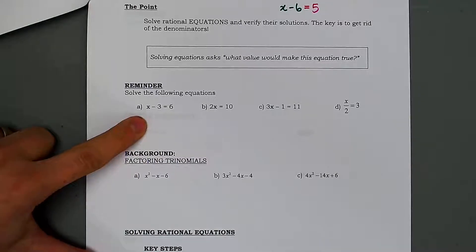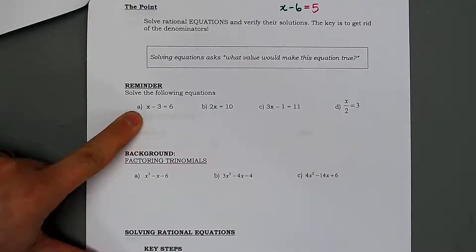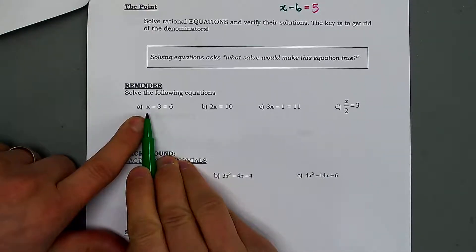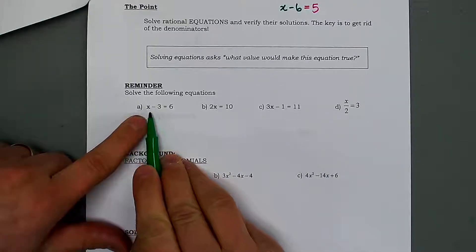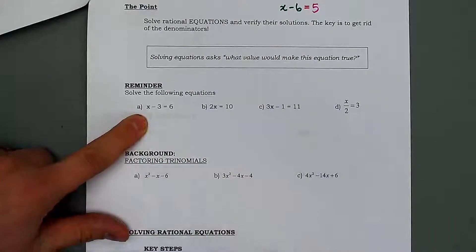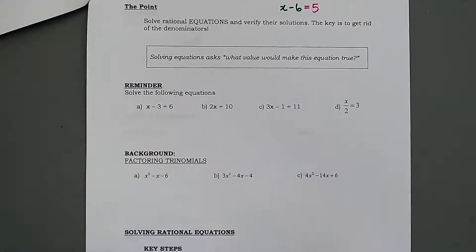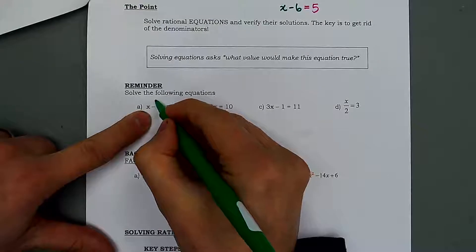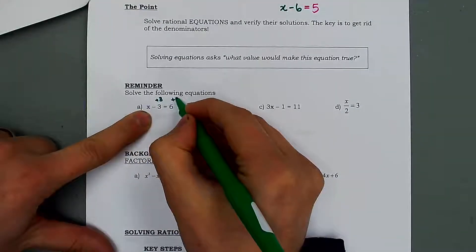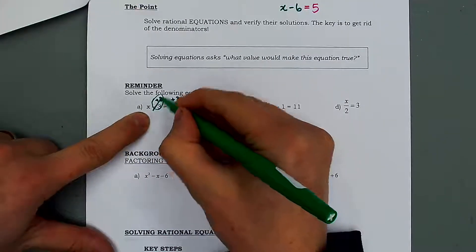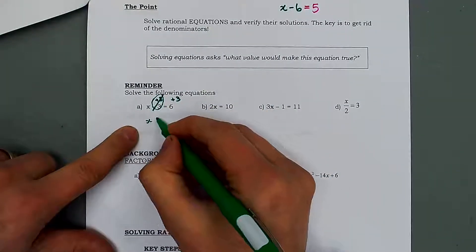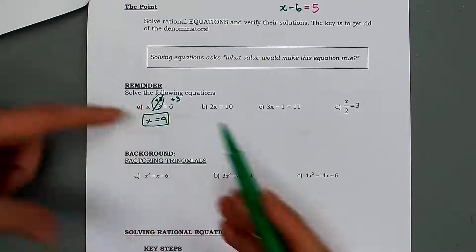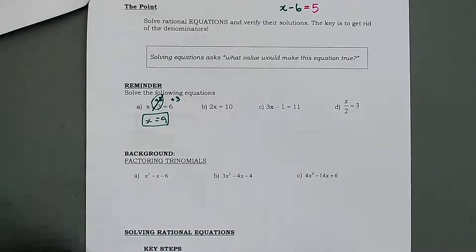Going back to grade 7, we first learned type 1 equations where we have one operation to get to our answer. Without guessing and checking, we can use opposite operations. The opposite of subtracting 3 is adding 3. If we add 3 to each side, this zeros out and the right side becomes 6 plus 3, which is 9. You can double check: 9 minus 3 is 6. Opposite operations is the key.